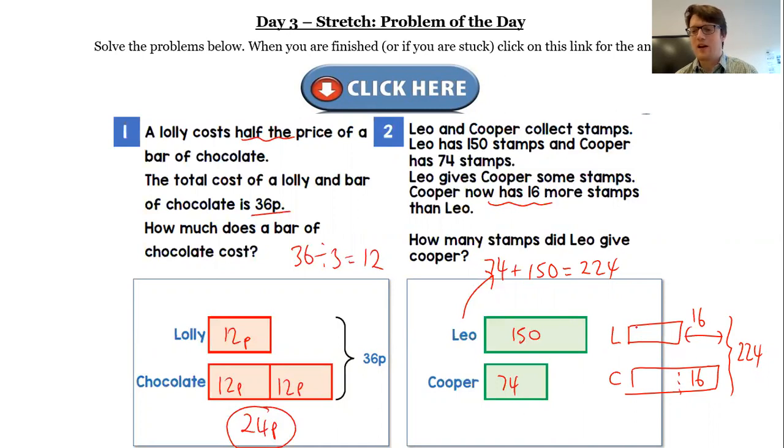So how can we work out what this box is here and this box is here? We know they're the same. So if we do 224 subtract 16, so we get rid of this bit, that gives us 208. So this bit here and this bit here is 208, so if we divide that by two we get 104.